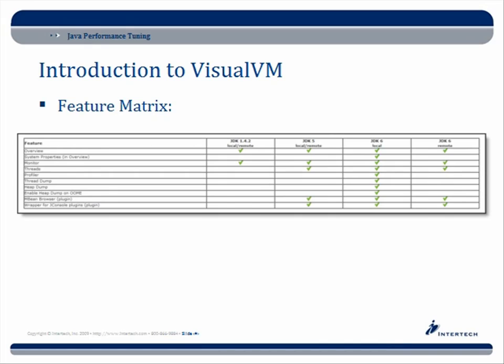If you're using JDK 1.4.2, the only things you're going to be able to use are the overview tab and the monitor - nothing else will work. If you use JDK 5, you have a few more things: threads, an MBean browser for JMX, and a wrapper for JConsole plugins. But not everything is fully featured. It's not until you get to JDK 6 that you get to use all the options I've shown you.